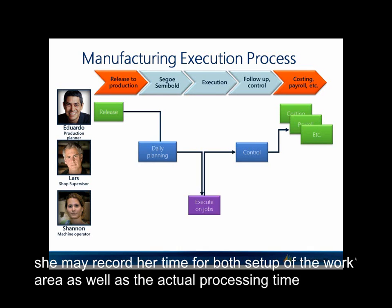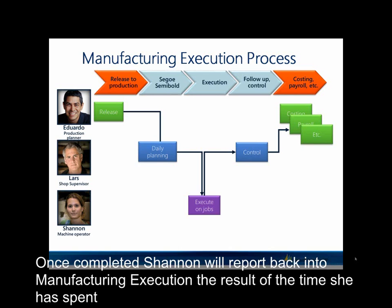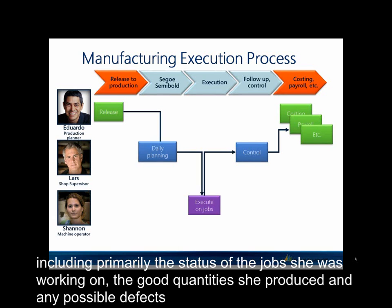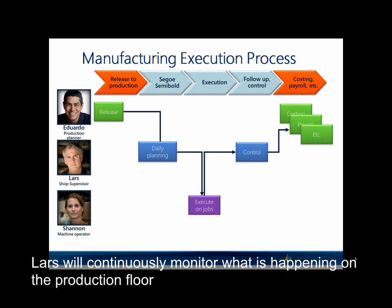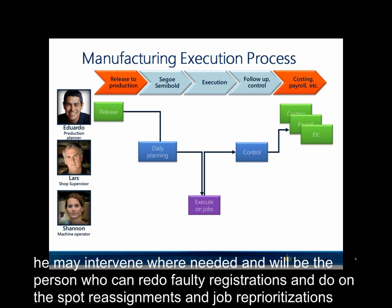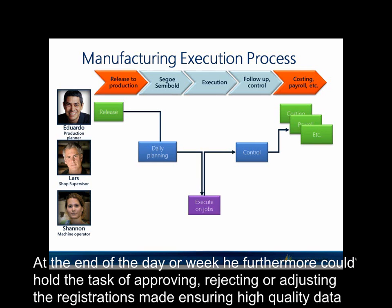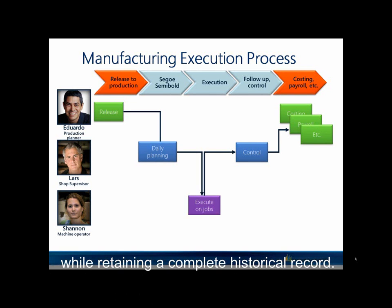She may record her time for both setup of the work area as well as the actual processing time. Once completed, Shanna will report back into Manufacturing Execution the result of the time she has spent, including primarily the status of the jobs she was working on, the good quantities she produced, and any possible defects and why those defects occurred. Lars will continuously monitor what is happening on the production floor. He may intervene where needed and will be the person who can redo faulty registrations and do on-the-spot reassignments and job reprioritizations. At the end of the day or week, he furthermore could hold the task of approving, rejecting, or adjusting the registrations made, ensuring high quality data while retaining a complete historical record.